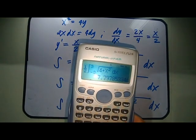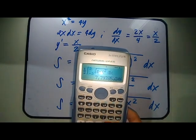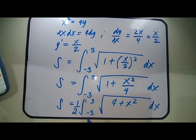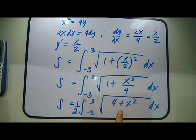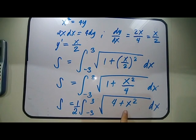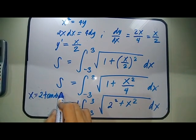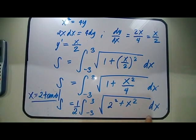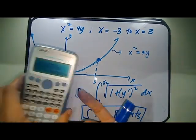If you want to solve this using the long method, you can use trigonometric substitution. The expression √(4 + X²) is of the form √(2² + X²), so the substitution would be X = 2 tan θ. You can then solve it manually, but using a calculator is also acceptable.